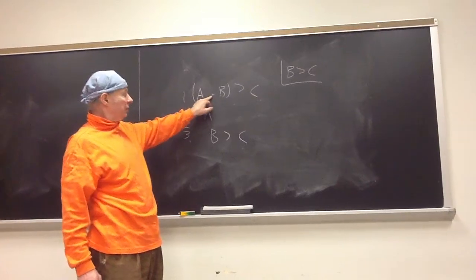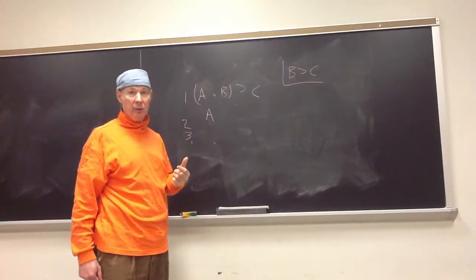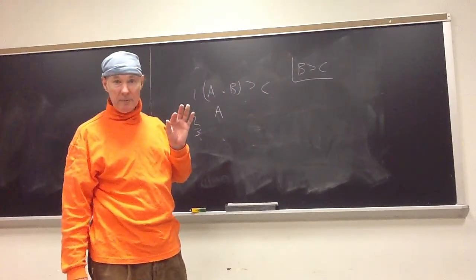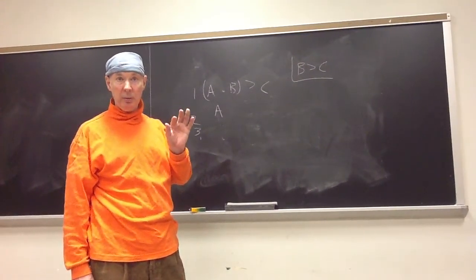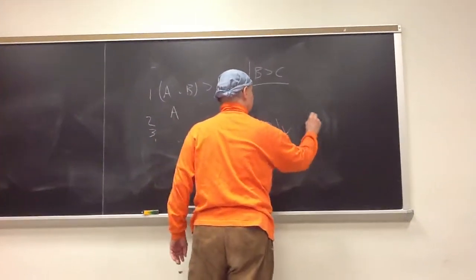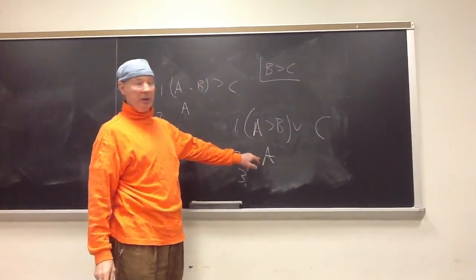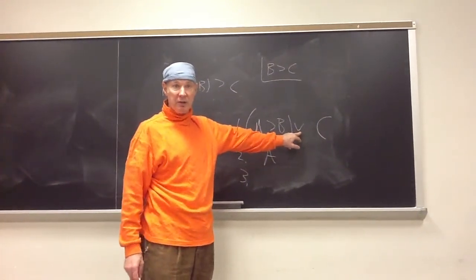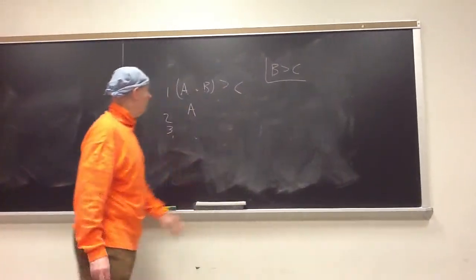Here the dot has smaller scope than the horseshoe. And thus you can't use simplification, which is one of the first eight rules. When you use the first eight rules, the truth function those rules govern, like MP governs the horseshoe, that truth function has to have larger scope. Otherwise, you can't use the rule. So I cannot do MP because this horseshoe does not have larger scope. The wedge has larger scope. So I could not do MP on this.